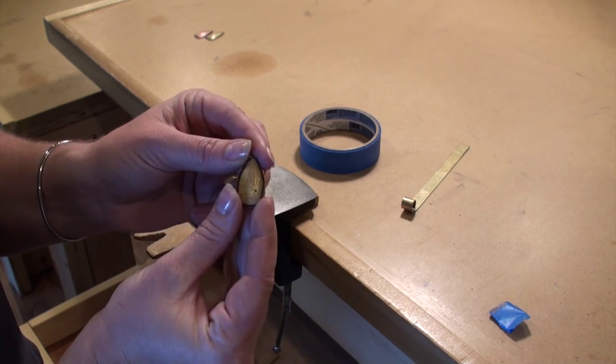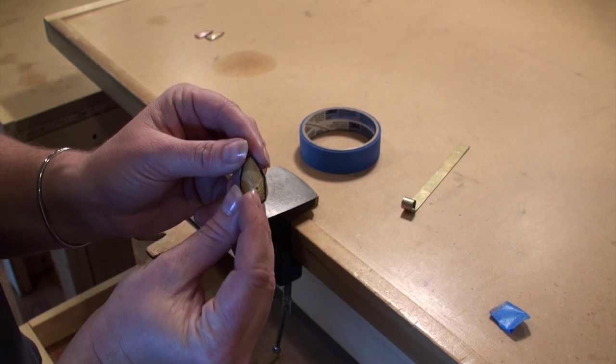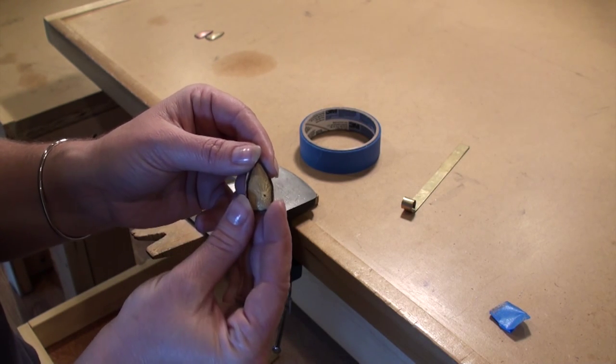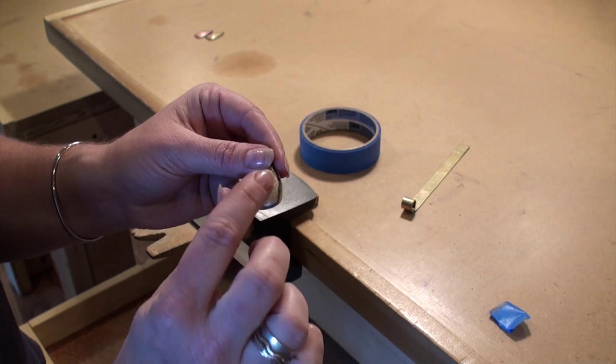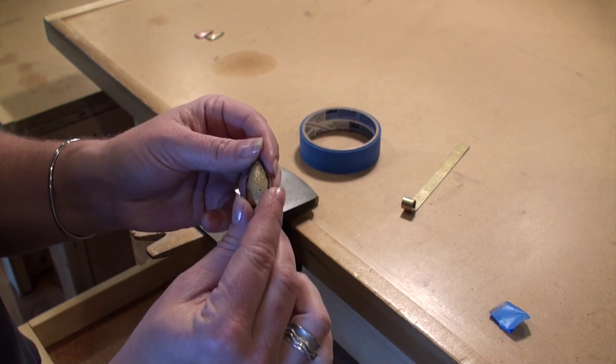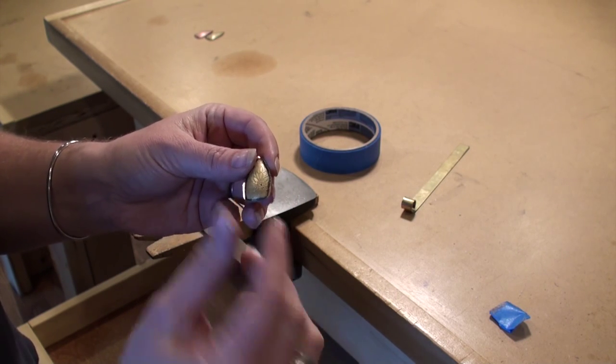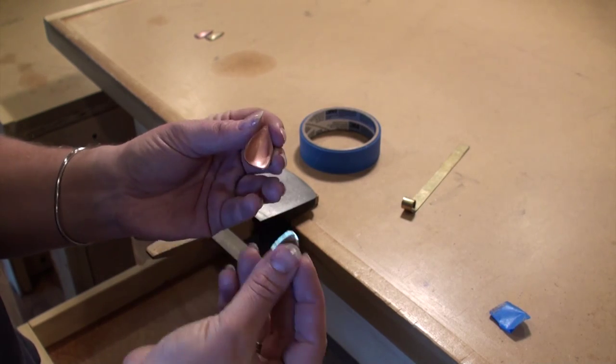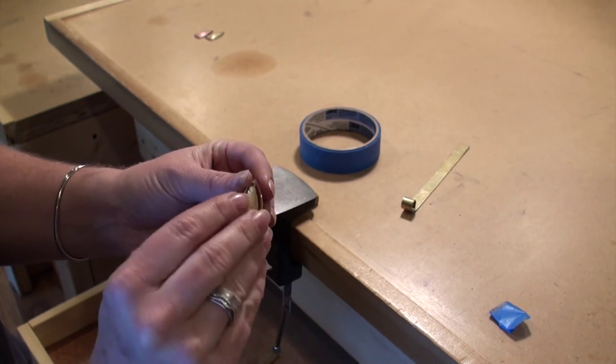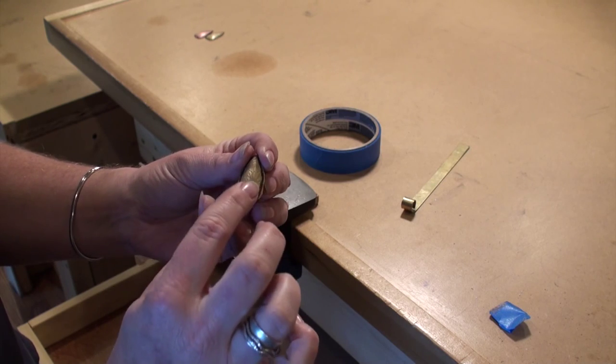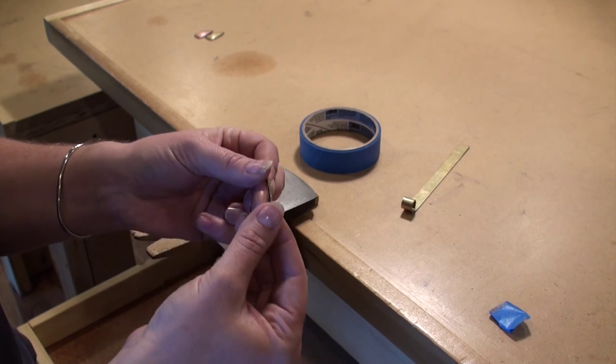Now another thing I'll point out is I do have a little hole. In this case, I happen to have a flower so it worked perfectly. We just drilled a little hole right in the middle of the flower. And that's going to allow gases to escape so that I don't blow the piece up with the fumes and the gases. So you always want to make sure that you have a little fume escape.